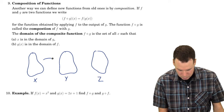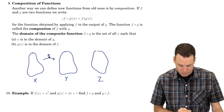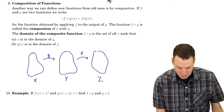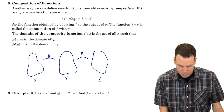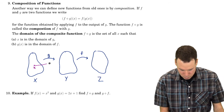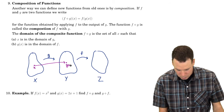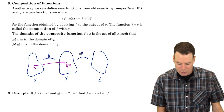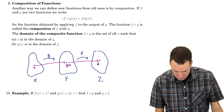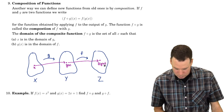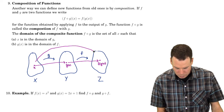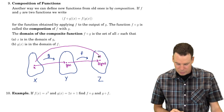So g goes from x to y, and f goes from y to z. We start with an x over here, apply g to it, and g gets us to some point g of x over in y. Provided that output is in the domain of f, we can then apply f to that, and we get f of g of x. So we started with an x and ended up with an element in z.